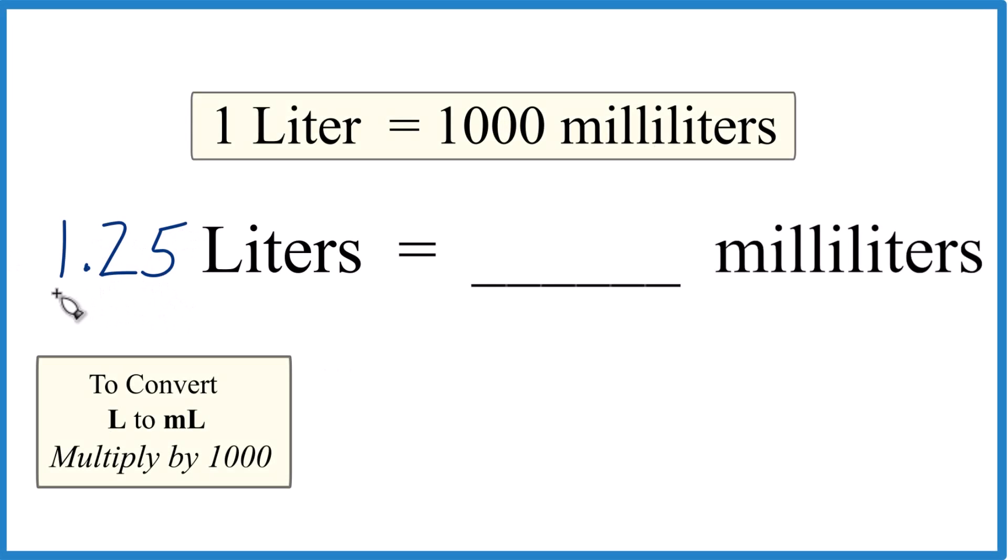If you're asked to convert 1.25 liters to milliliters, here's how you do it. First off, you need to know that one liter equals 1,000 milliliters. That's our conversion factor.